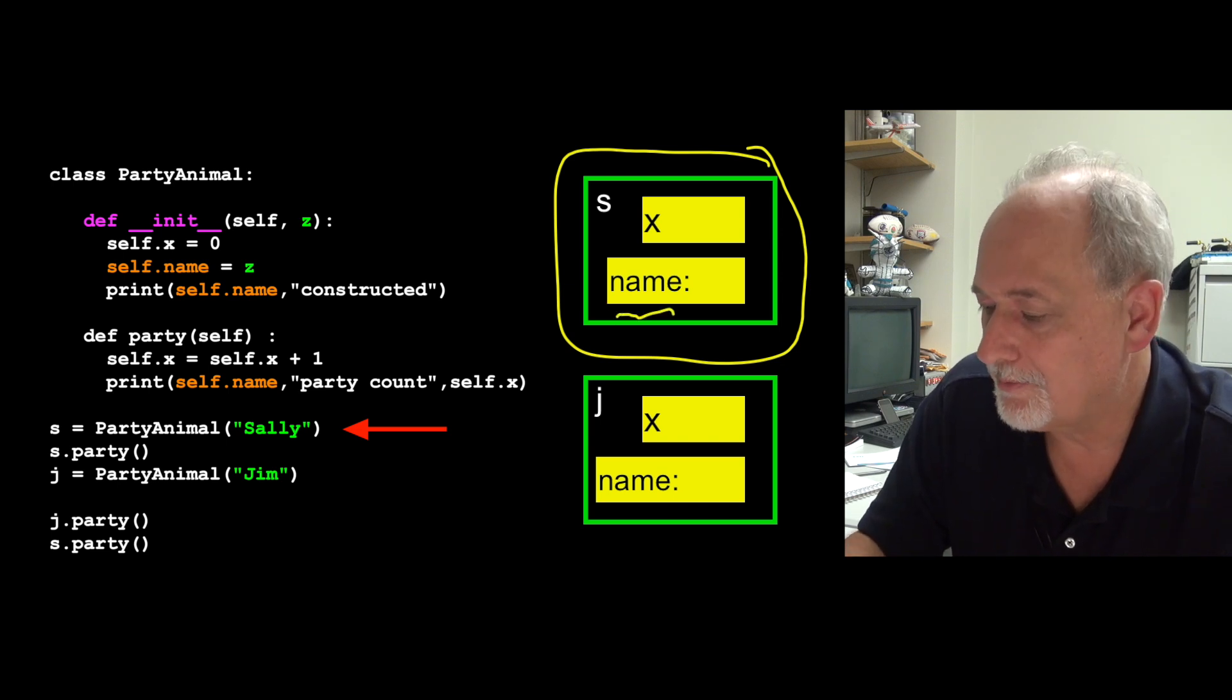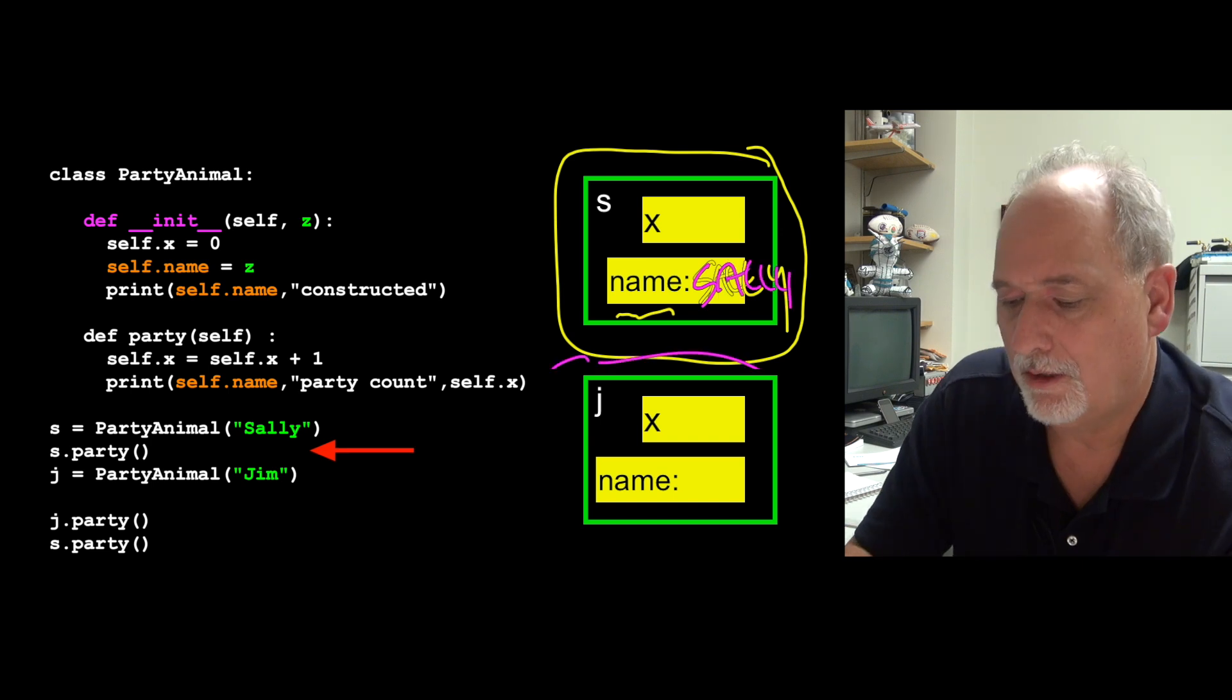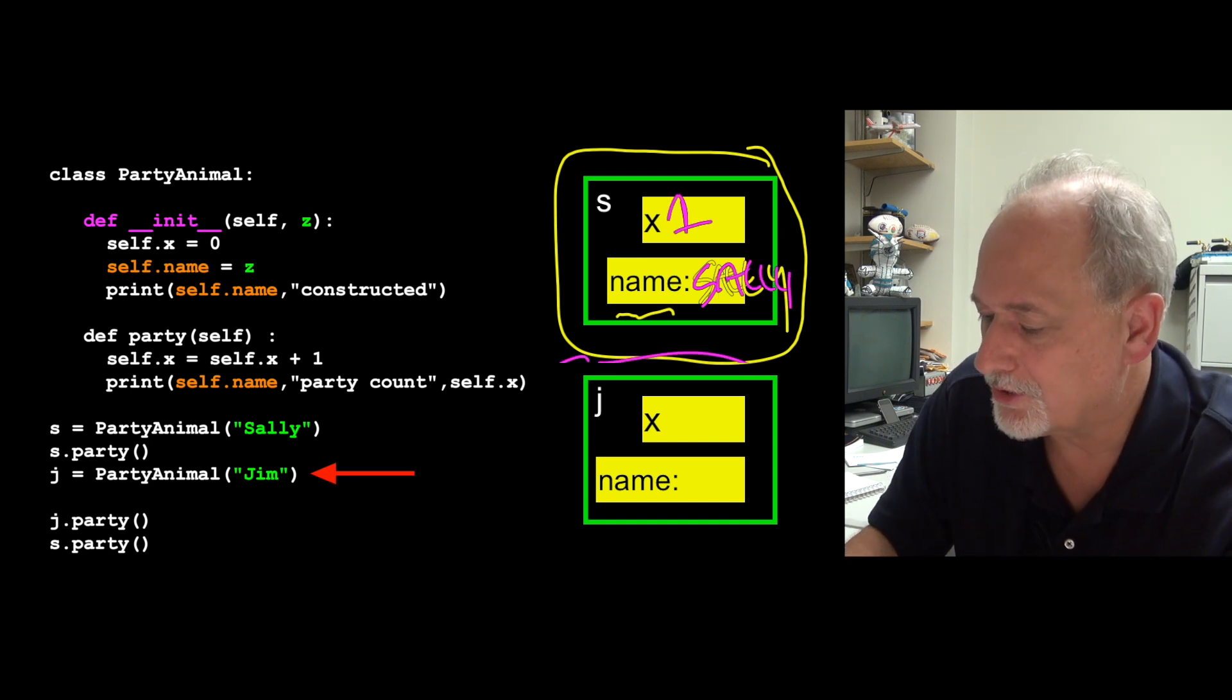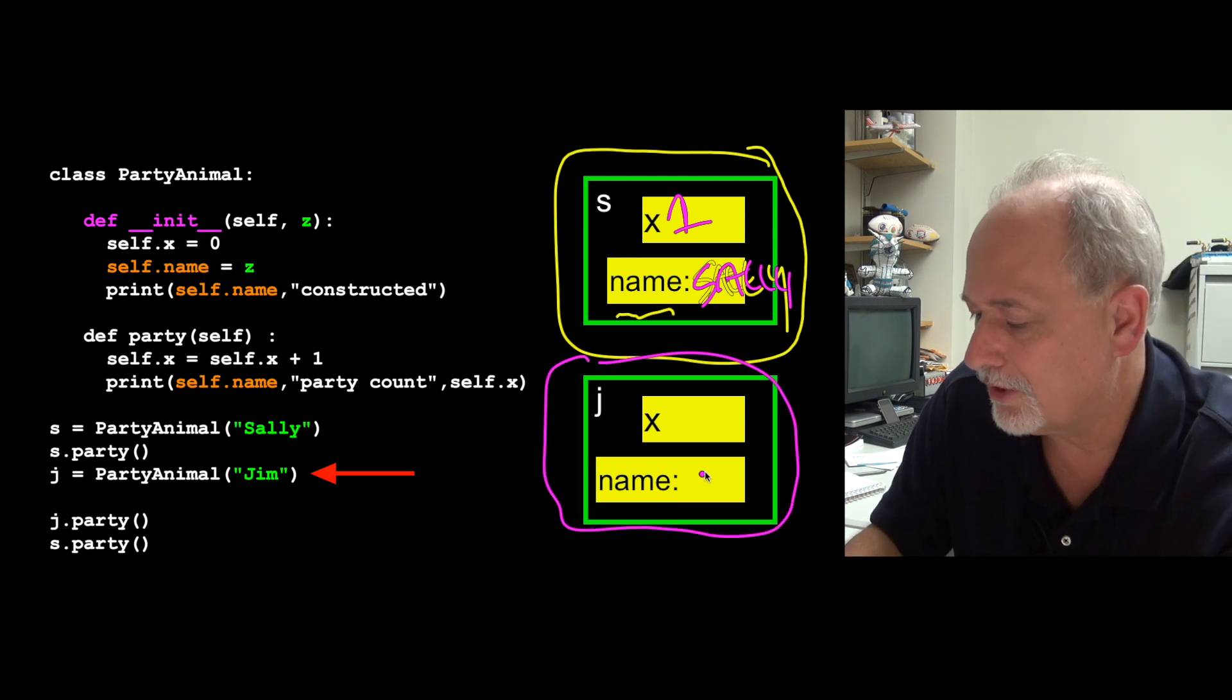And now we say, let's make, and that's going to have Sally in there. s.party, then this turns into a one. Then we're going to do another constructor, and so it's going to make a whole new thing, and it's going to store that in j, and this one's going to have Jim in it.